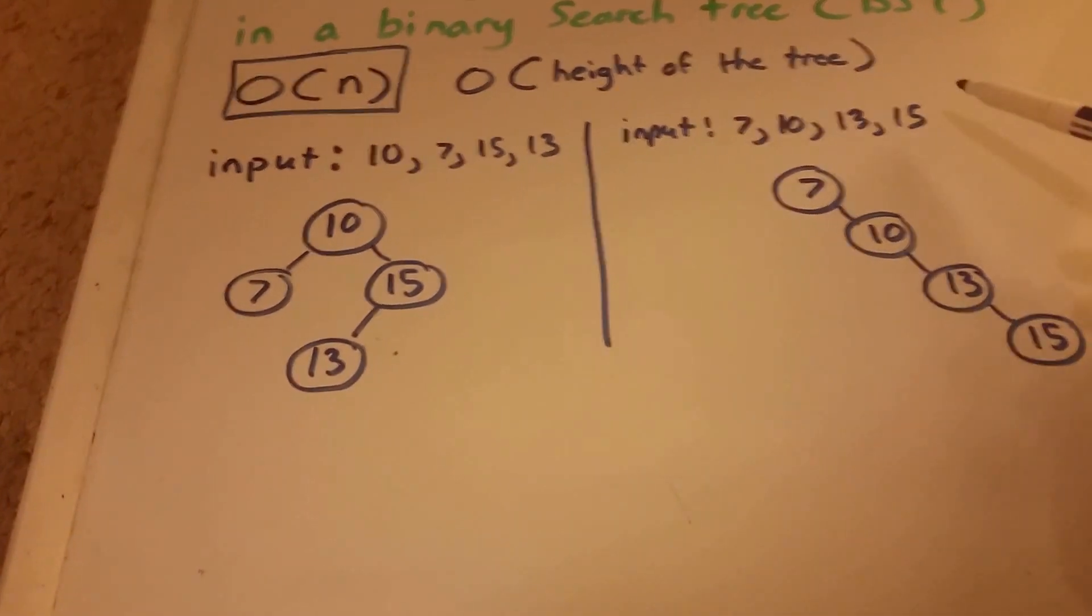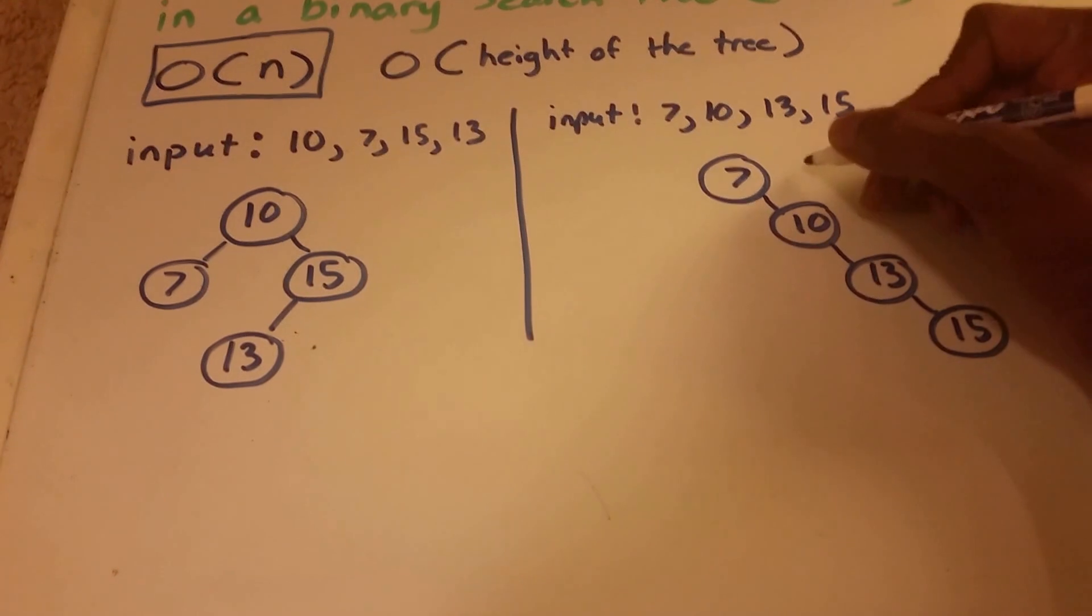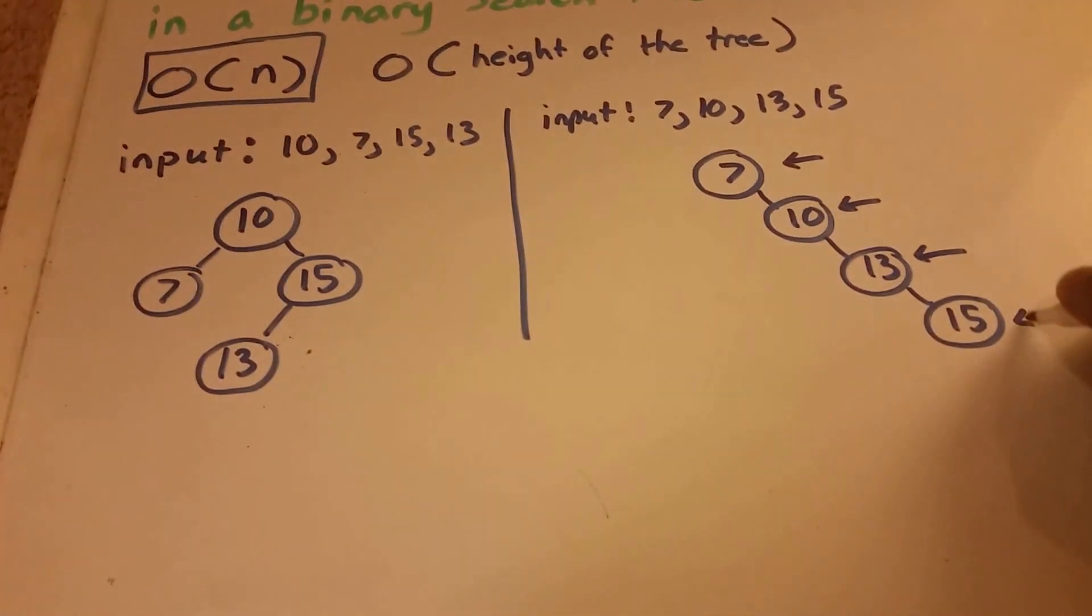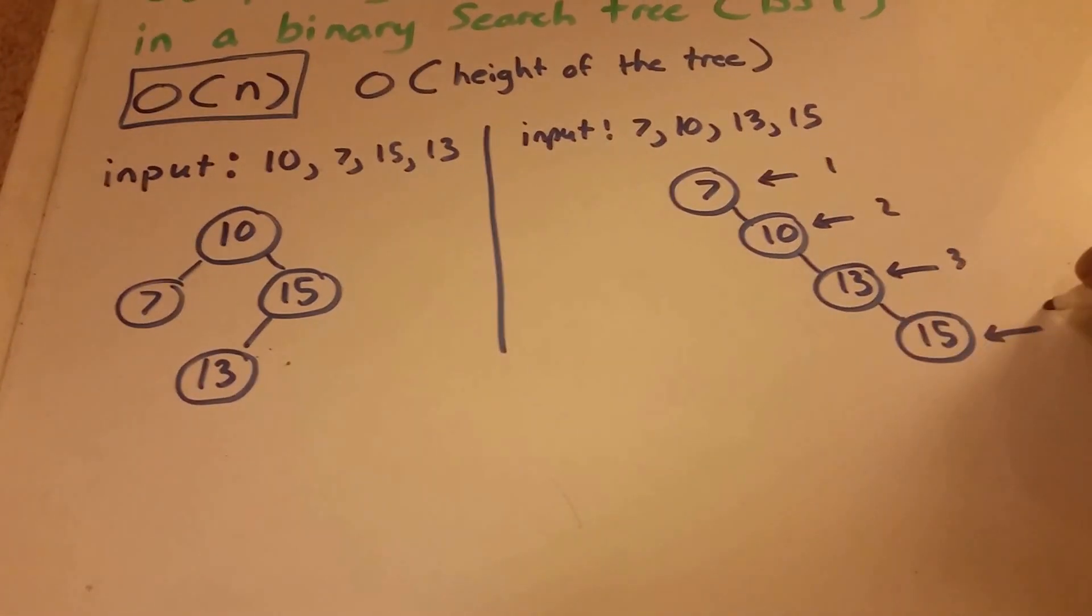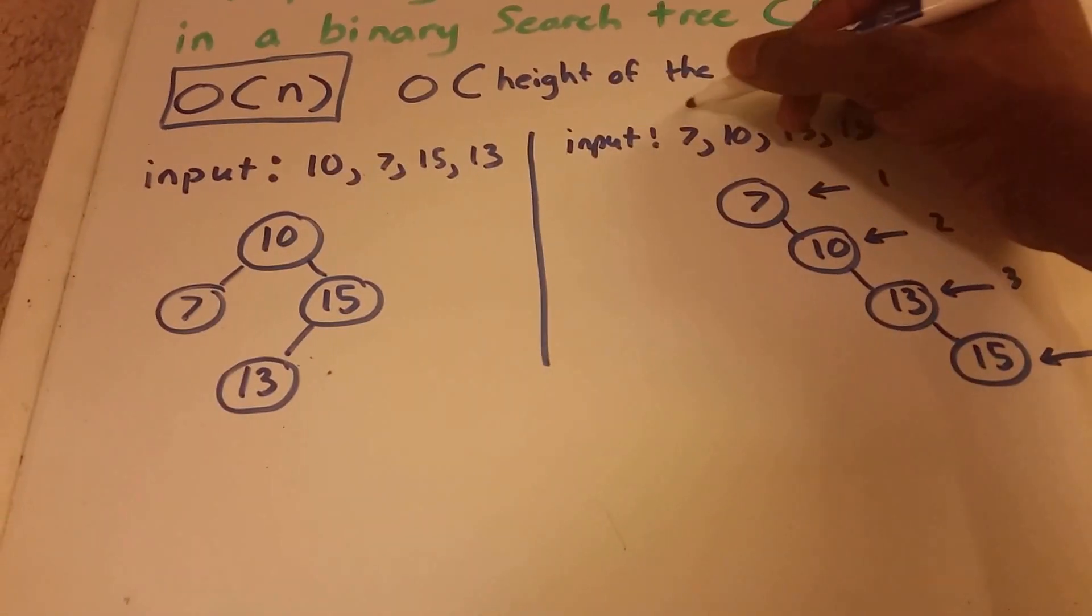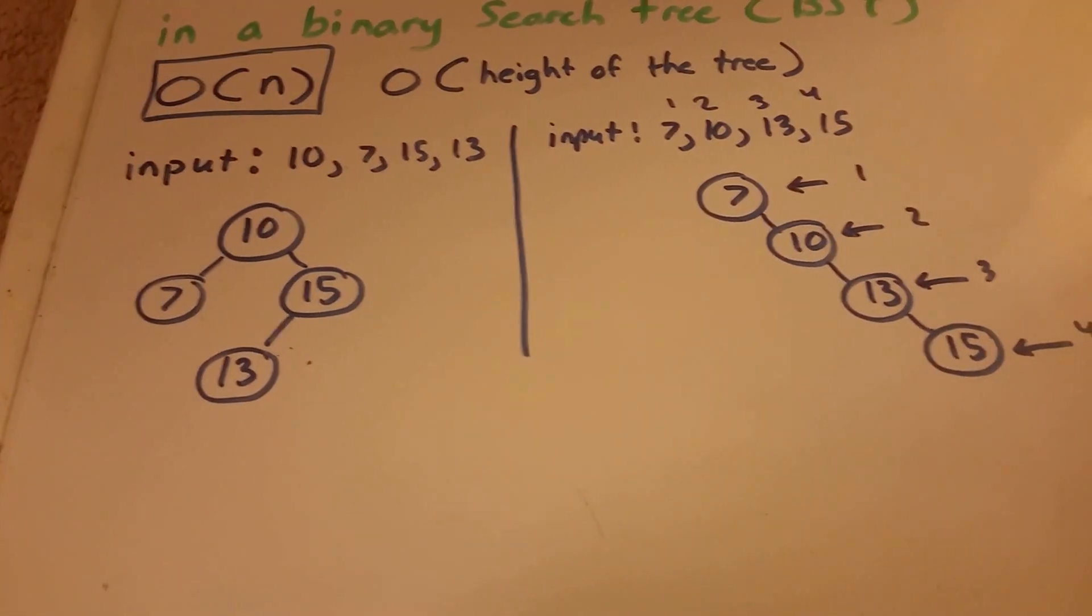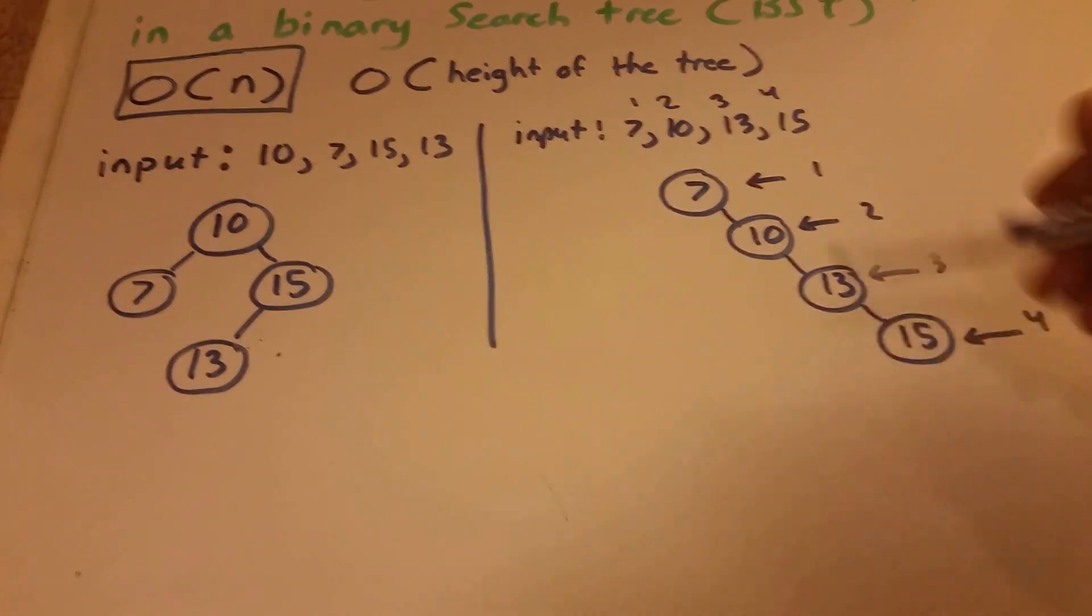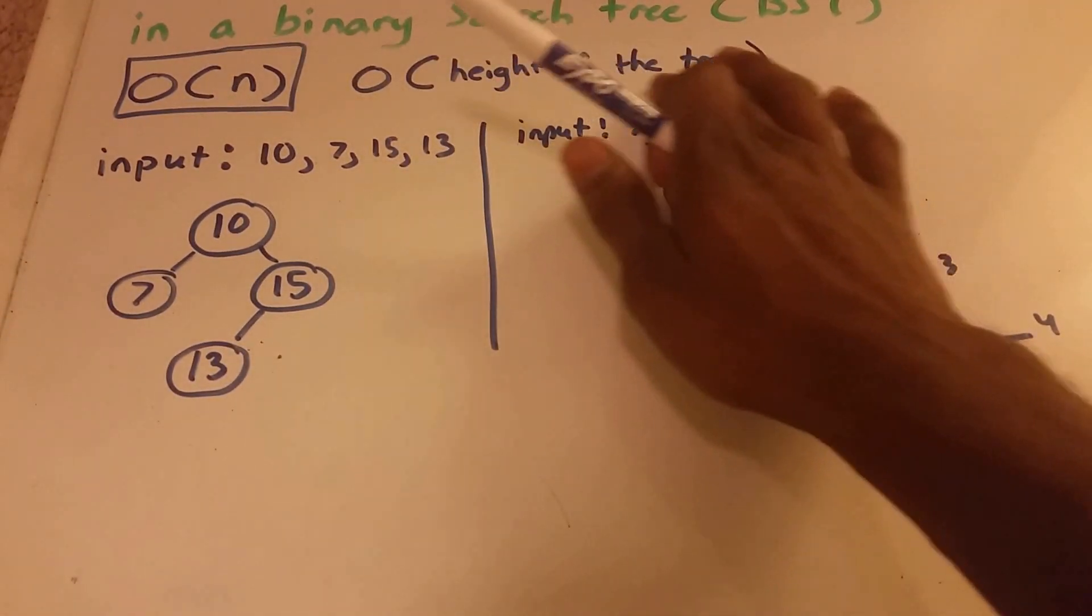Now, if we were searching for the element 15, we'd have to go down this height of the tree. 1, 2, 3. We have to go to the fourth height. 1, 2, 3, 4. And there's 1, 2, 3, 4 elements here. So the worst case of searching for an element in a tree is the number of elements that are in the tree.